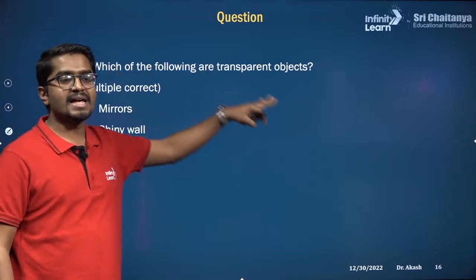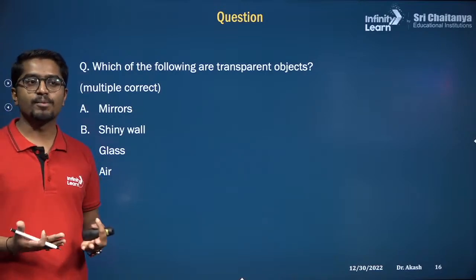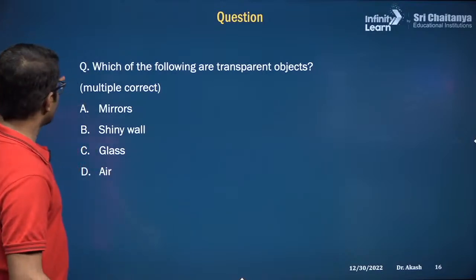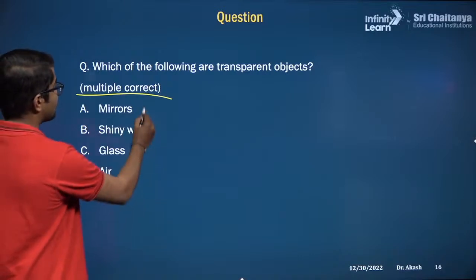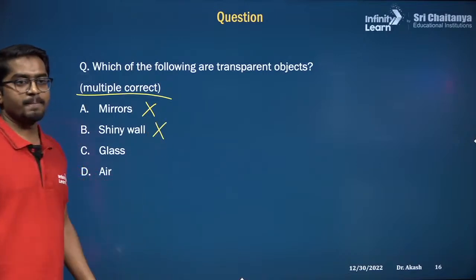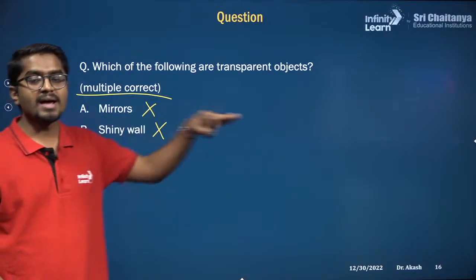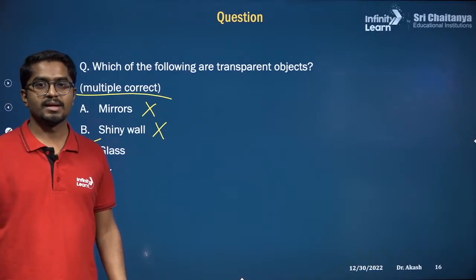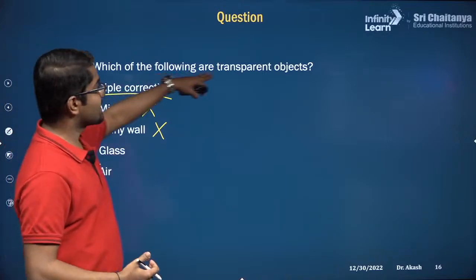First, answer this: which of the following are transparent objects? A transparent object is something through which light can pass. Mirrors are not transparent — they reflect light. Shiny walls are also not transparent. But glass and air are transparent — light can pass through them, so they are called transparent objects.